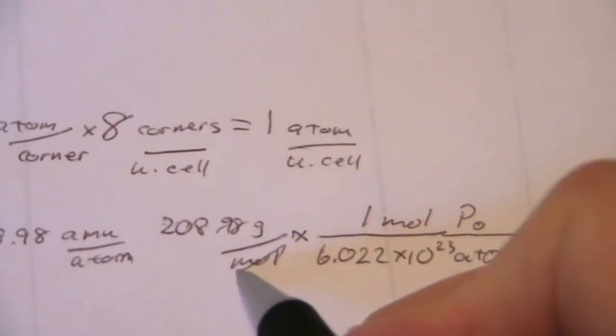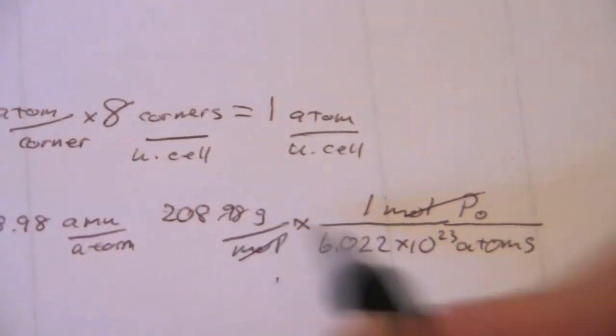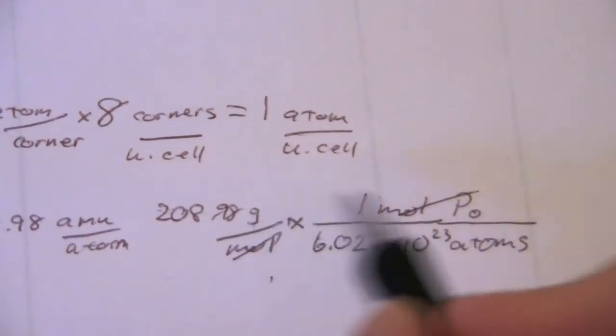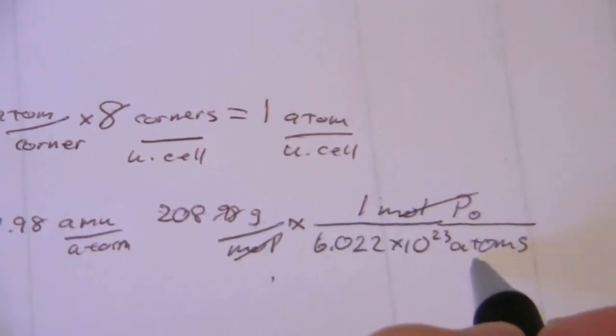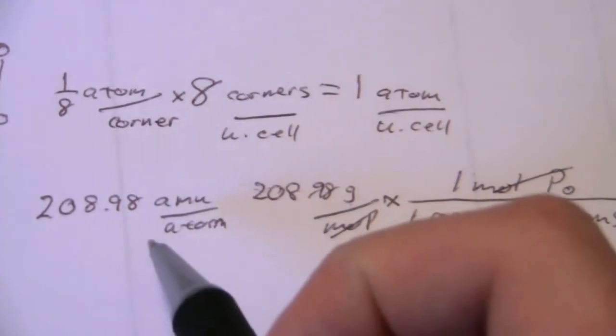6.022 times 10 to the 23rd atoms per one mole of polonium. So now my moles cancel, and I have, when I calculate this, it will give me grams per atom of polonium.